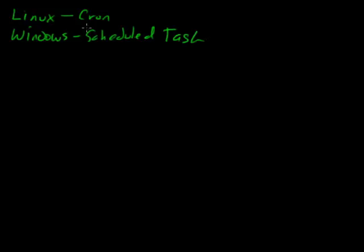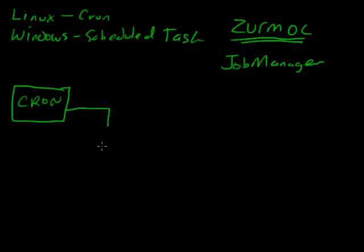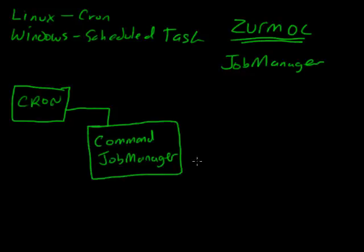What your scheduled tasks or cron are going to do is call Zermo's command line. You should already know what Zermos C is — that is a command line command you can run. There's a bunch of different command lines in Zermo, and one of those is Job Manager. The cron tab is going to call this command, and when you run the Job Manager you actually specify which job you're going to run.